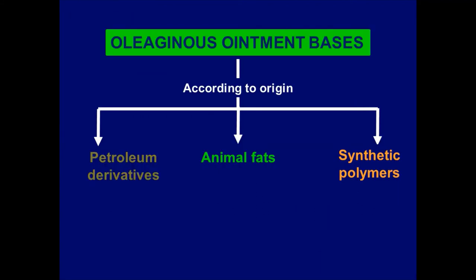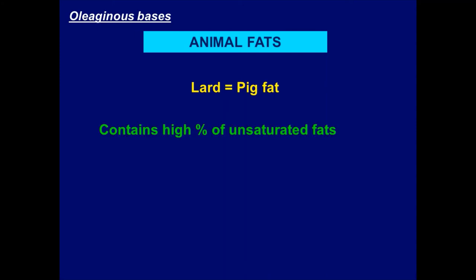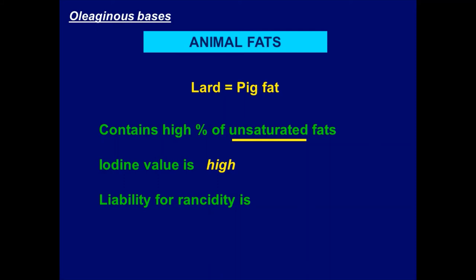Animal fats are another type of oleaginous ointment base, mainly lard — pig fat. Lard contains a high percentage of unsaturated fats, meaning many double bonds, so its iodine value is high and its liability for rancidity is high. For this reason, lard is no longer used as an ointment base.